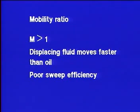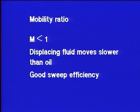When M is greater than 1, the displacing fluid, perhaps water or gas, moves faster than oil and will very likely bypass some of it, resulting in a low sweep efficiency. On the other hand, if M is less than 1, the oil is capable of moving faster than the displacing fluid, and we have good sweep efficiency.